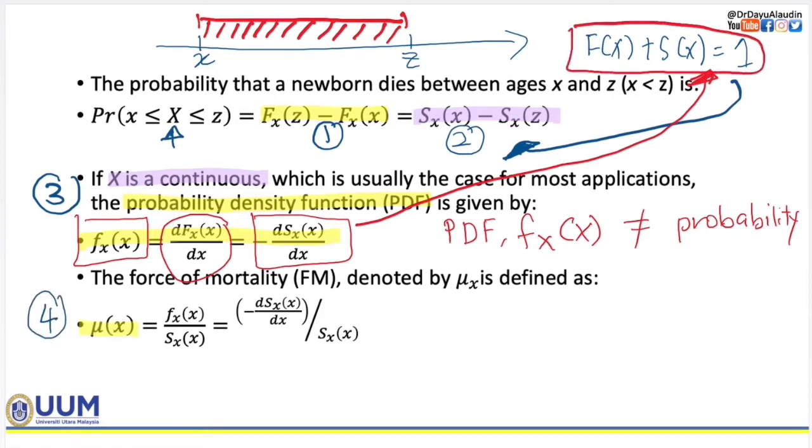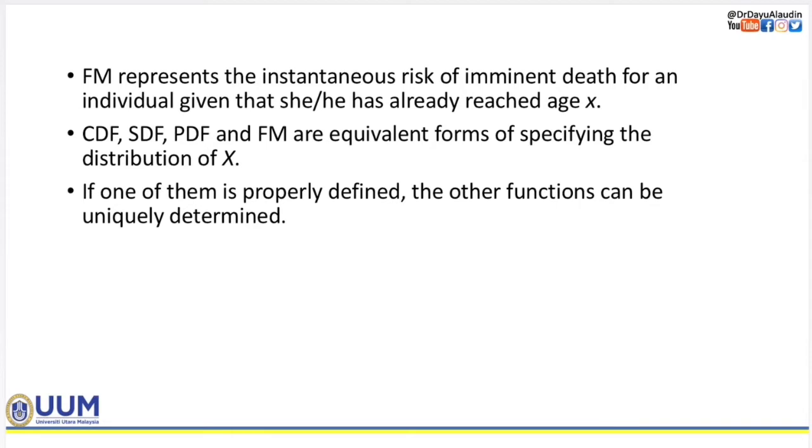The fourth notation is mu X. So mu X is equal to PDF over SDF. Next one, force of mortality, the FM, represents the instantaneous risk of imminent death for an individual. What is imminent? It's about to happen, meaning that the death is about to happen. So far we already learned CDF, SDF, PDF, and FM. There are equivalent forms of specifying the distribution of X.